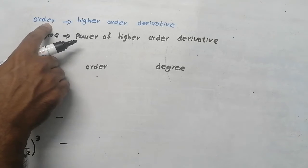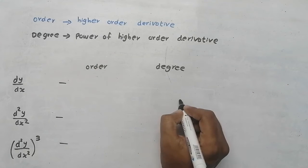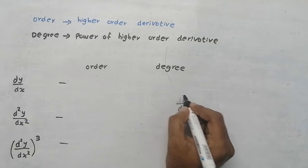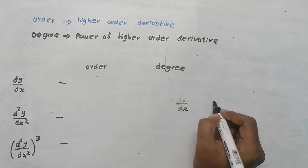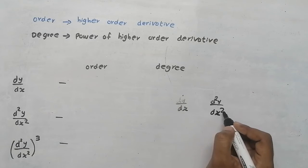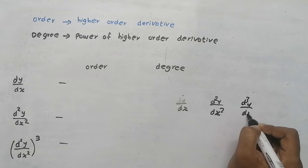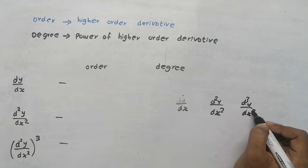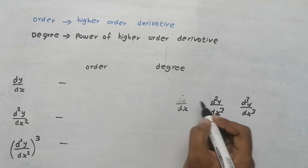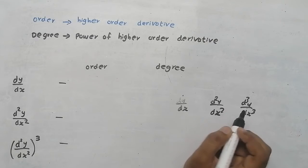So what do you mean by order? Order means the highest order derivative. If dy by dx, it is a first order derivative — order is 1. d²y by dx² is a second order derivative — order is 2. d³y by dx³ is a third order derivative — order is 3. So the orders here are 1, 2, and 3.